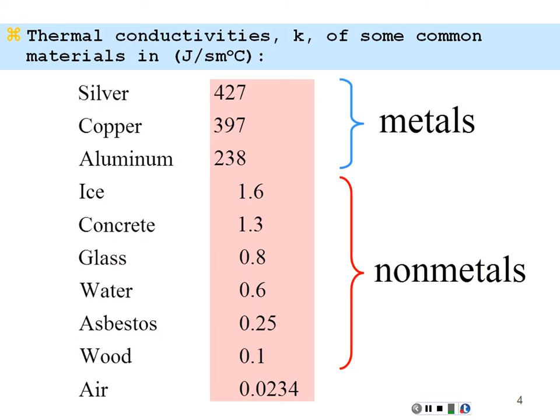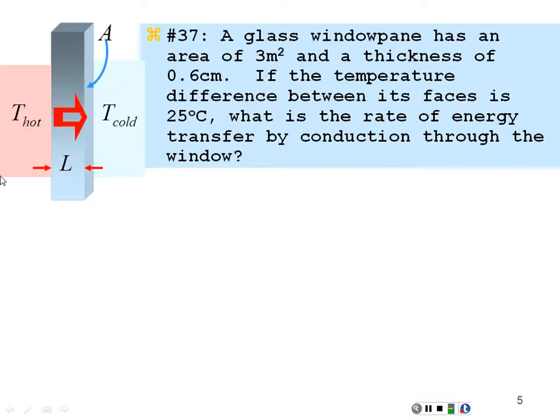On the other hand, we have some non-metals that are good insulators. Ice, concrete, glass, water, asbestos, wood. These are good insulators, and ironically, ice being a good insulator would make a good substance to make a house out of in cold climates. So even though it's cold outside and you've got frozen ice, it acts as a good wall like an igloo to protect you from the outer cold. An even better insulator is air with the lowest thermal conductivity on this list. So gases are good thermal insulators.